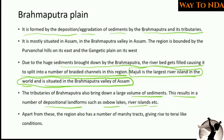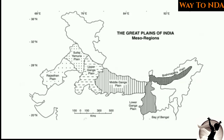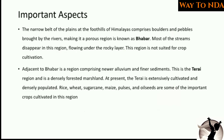Plains are formed due to the deposition of silt brought by rivers — whether Ganga, Brahmaputra, or Yamuna. The Brahmaputra Plain region also has marshy tracts giving rise to Tarai-like conditions. Together, the Rajasthan Plain, Punjab Plain, Ganga Plain, and Brahmaputra Plain form the Northern Plains or the Great Plains of India.